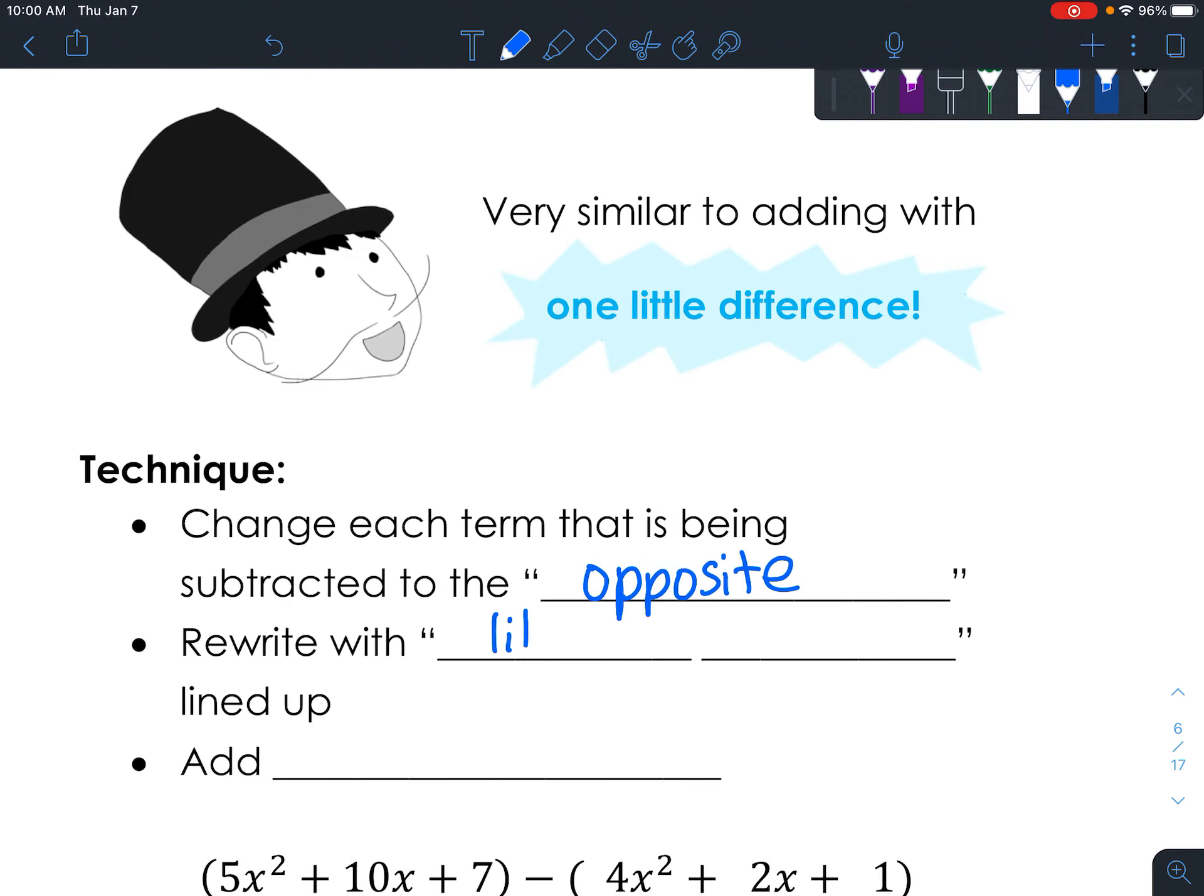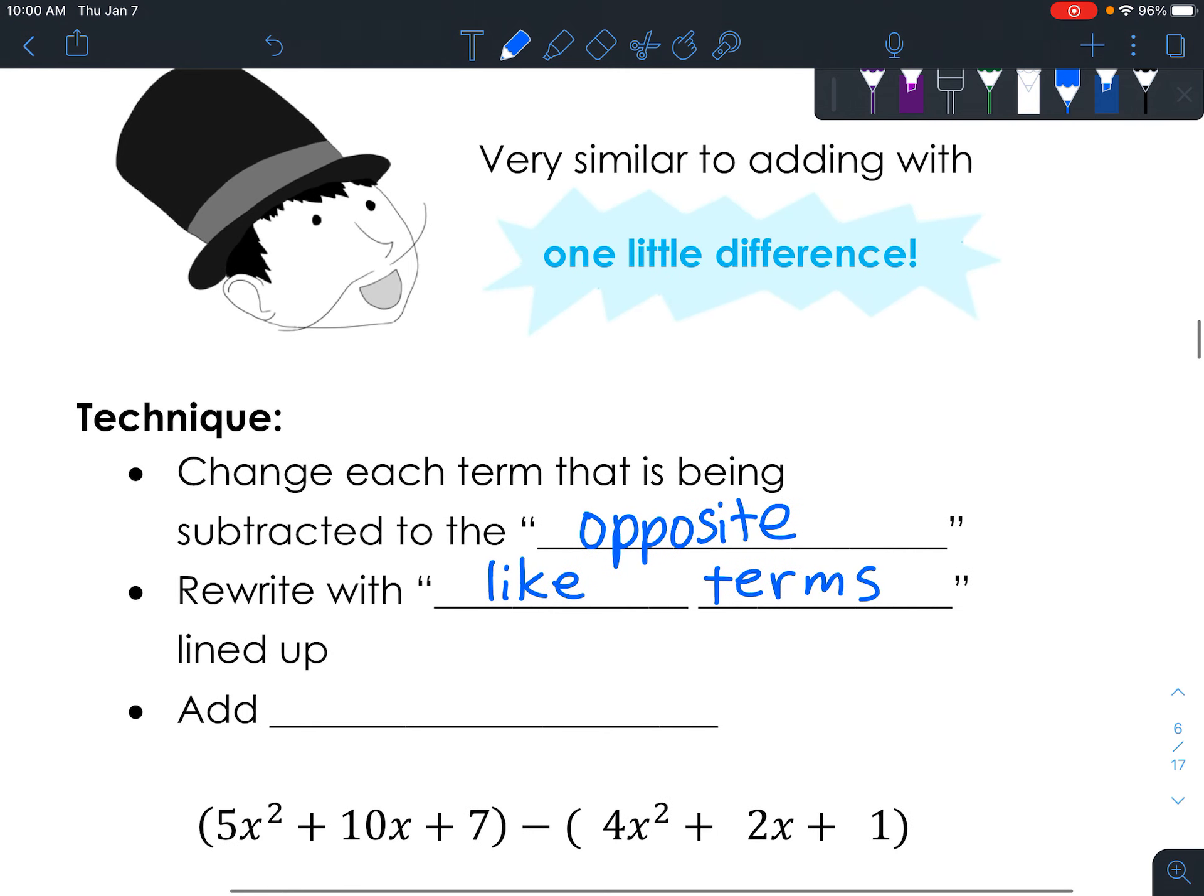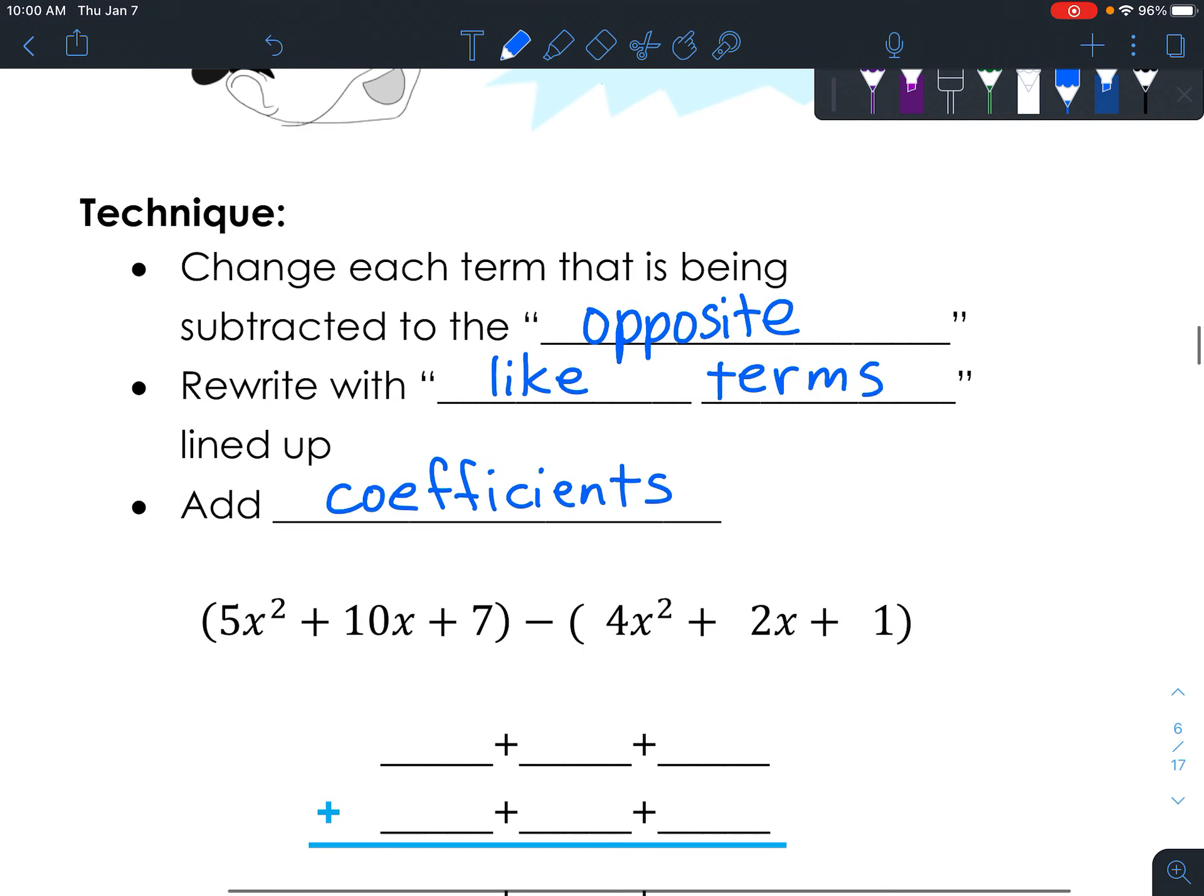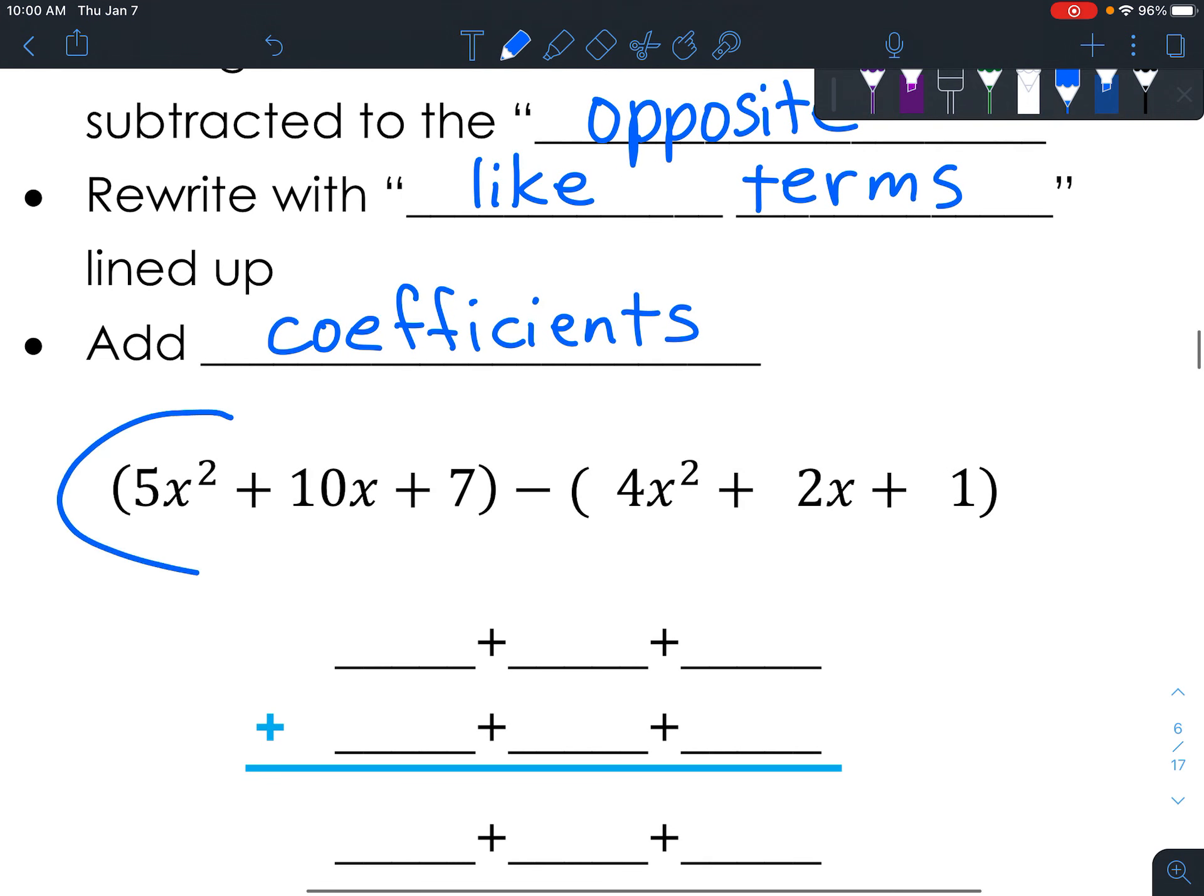And you're going to then rewrite with the like terms. This is just a technique. You don't exactly have to do it this way. This is a technique that keeps everything easy to understand and makes it organized so you can get it done quicker. So first step, change each term that's being subtracted to the opposite.